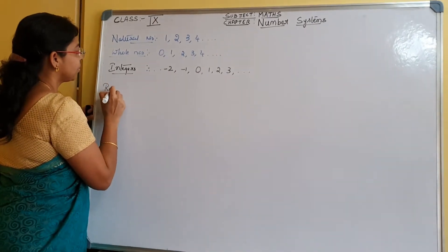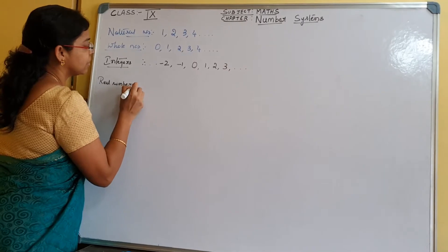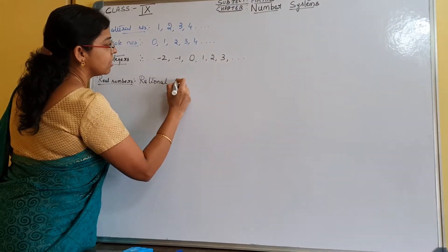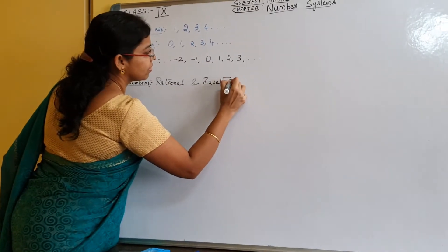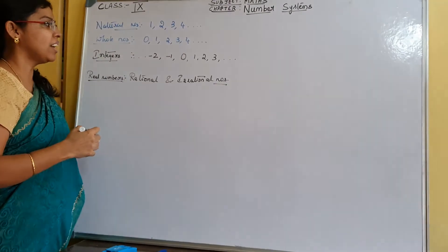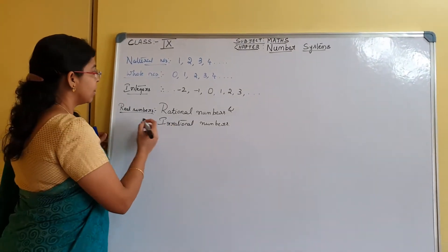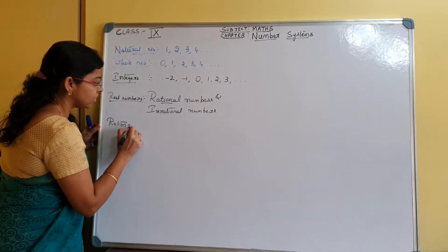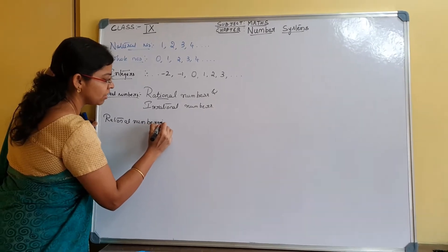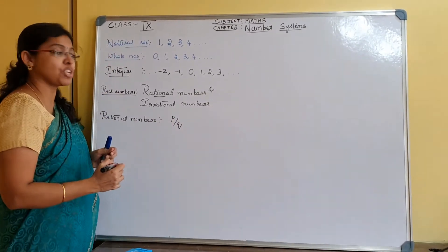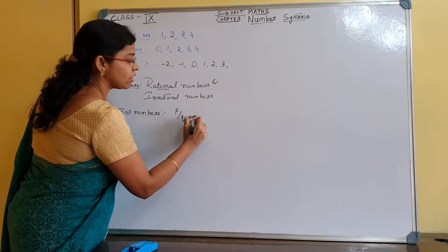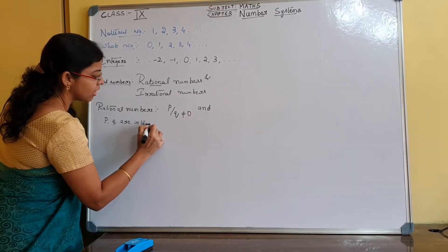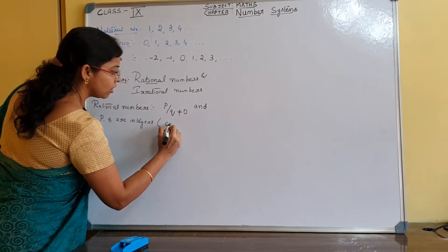Next we will go to real numbers. What are real numbers? These are the numbers which include rational and irrational numbers. Real numbers include rational numbers and irrational numbers. What do you mean by rational numbers? Rational numbers are those which can be written in the form of P by Q, where Q is not equal to 0 and P and Q are integers. They are not only integers — they are also co-prime.